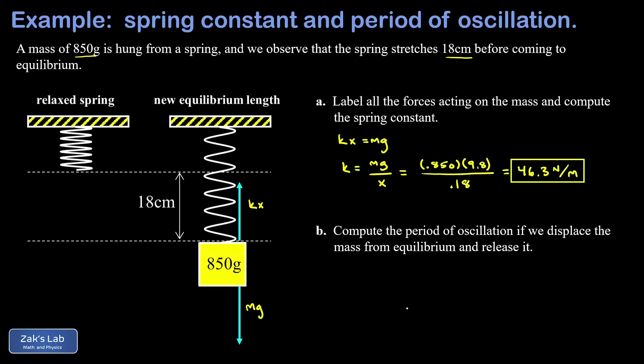Now to compute the period of oscillation, if we displace this mass from its equilibrium position and release it, the period is just given by the formula 2 pi square root m over k. And I'll post a link to the video where that was derived using calculus.